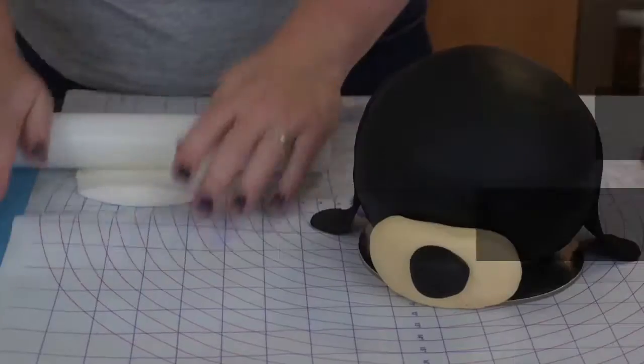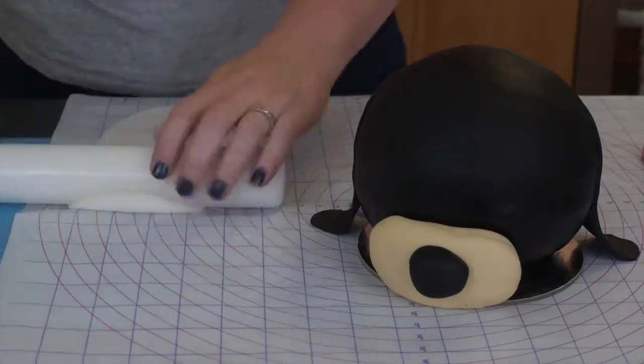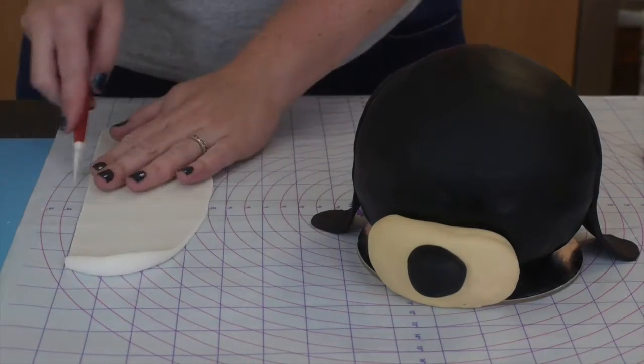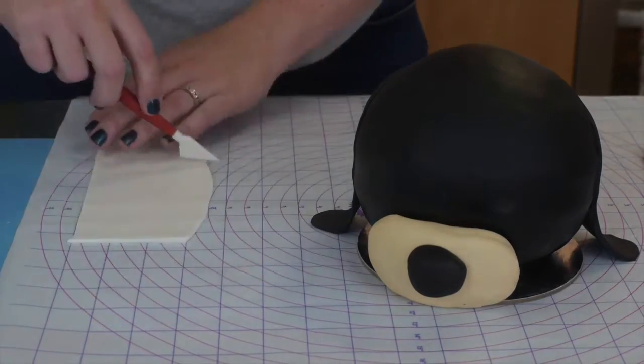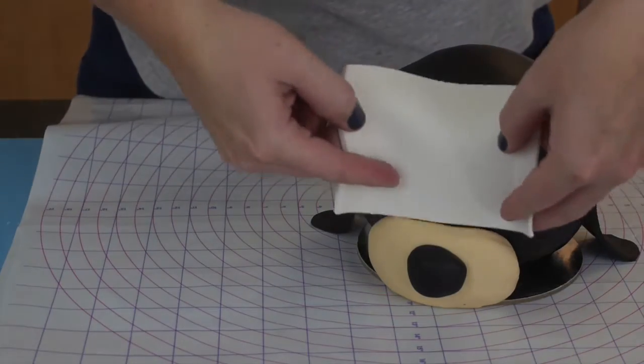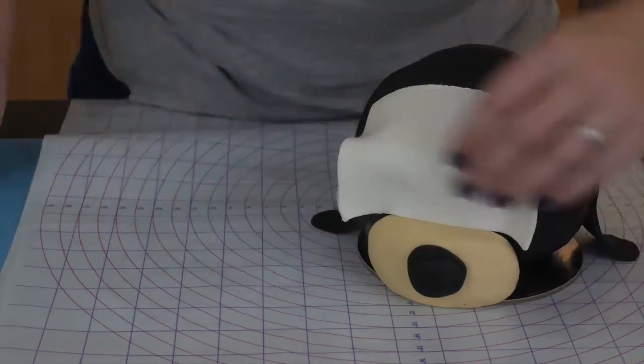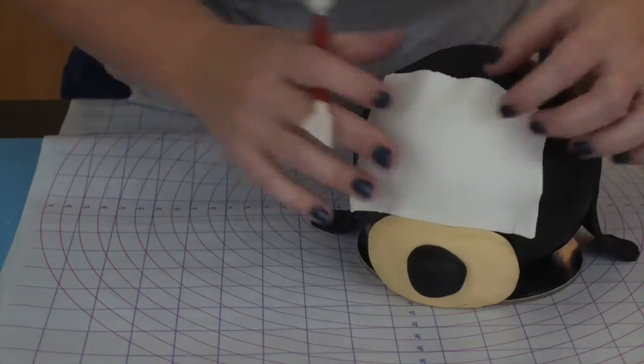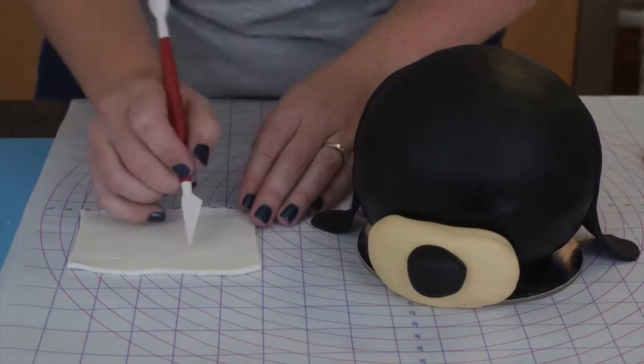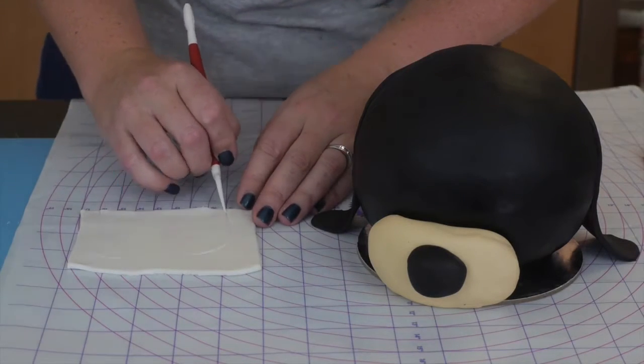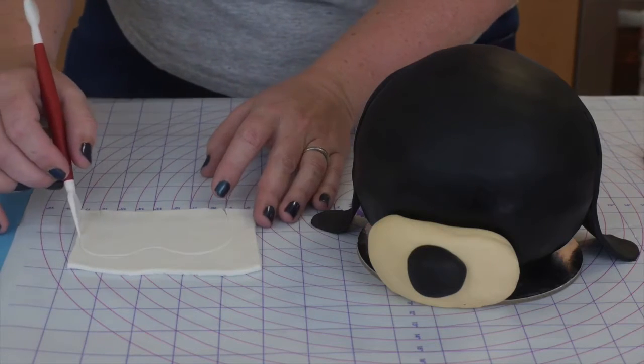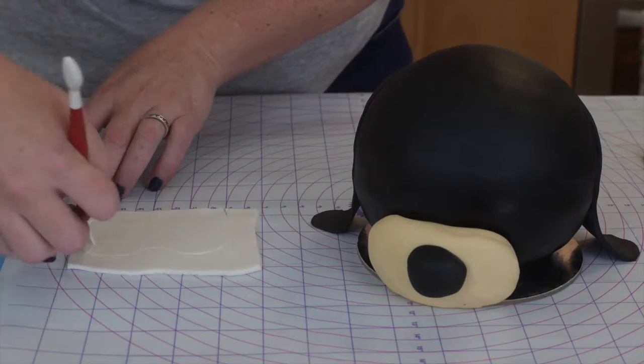It's then time to add on our eyes. So just rolling out a little bit of white fondant, straighten out the edge as best as possible so you have a nice smooth straight bottom. And then I find it's easiest just to put it on the cake and measure out where I want it to end. So I need the white to come to the edges of this snout and the height I want the curves of the eyes to be.